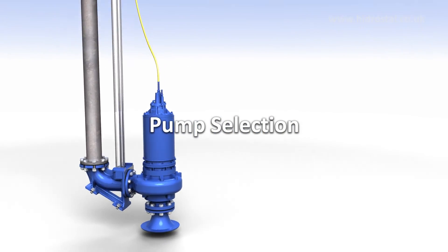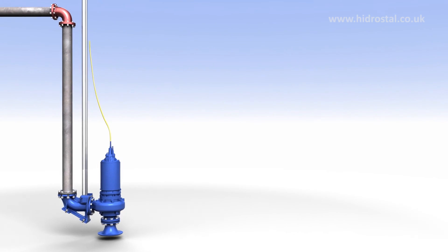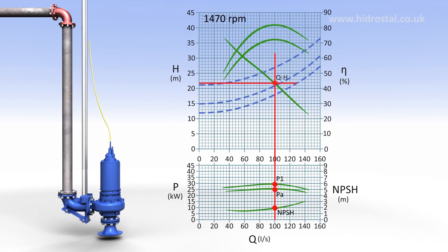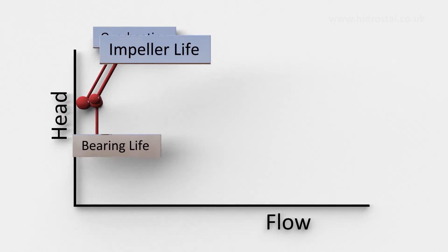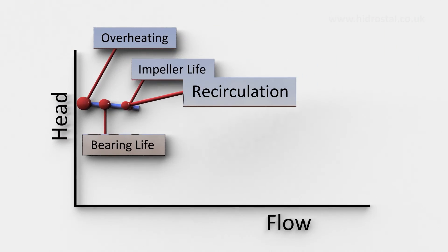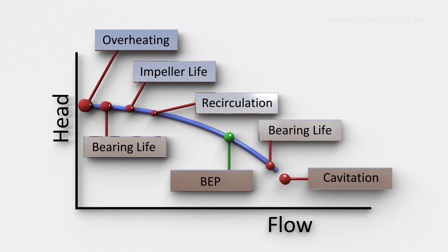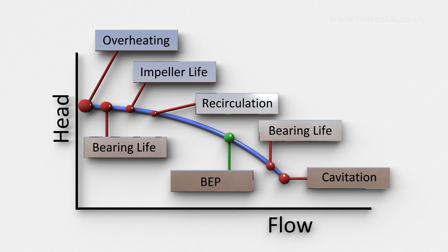Good pump selection can really boost a system's performance. Knowing and utilising the pump's best efficiency point is crucial. Ideally the highest utilisation duty point should occur between 80 and 105% of the pump's BEP. Anything outside this range can lead to increased operational and maintenance issues, increasing the cost of ownership for the end user.